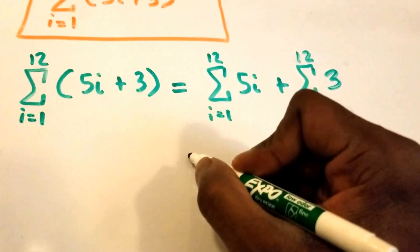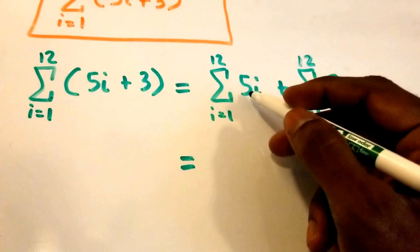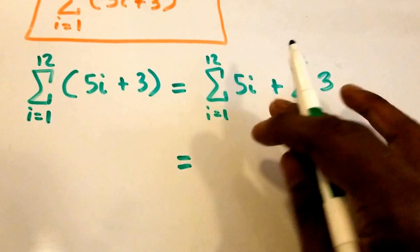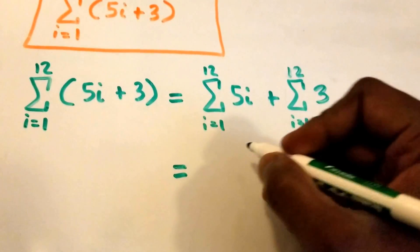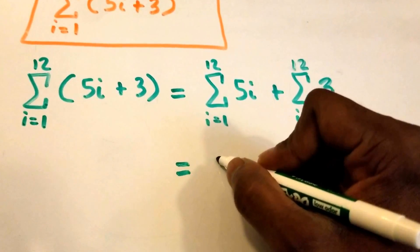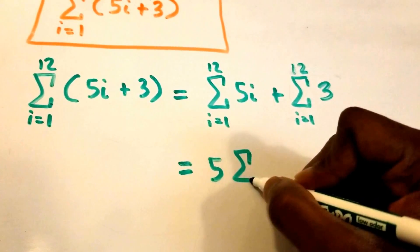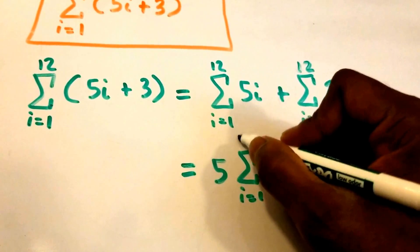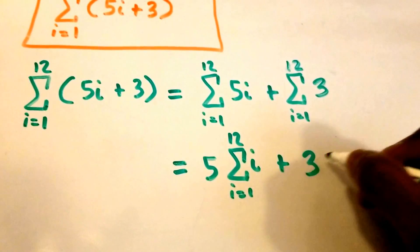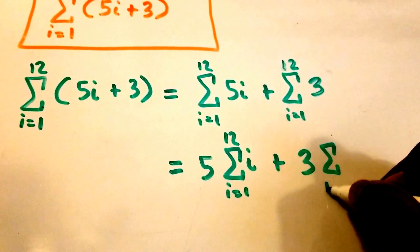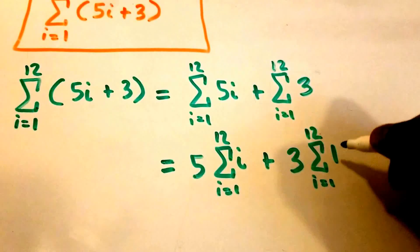So now what does this equal? Well, again using summation properties, we can pull out the constants — the numbers 5 and 3. So we're going to get 5 times the summation from i equals 1 to 12 of i, plus 3 times the summation from i equals 1 to 12 of 1.